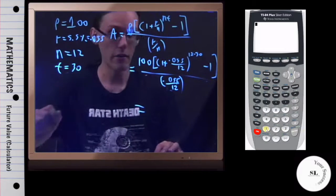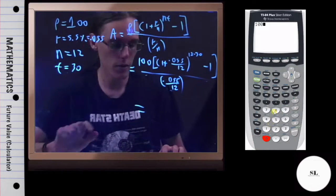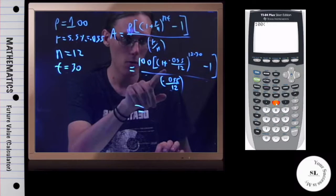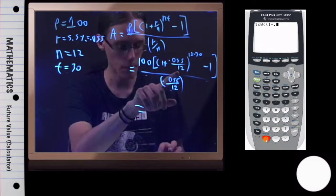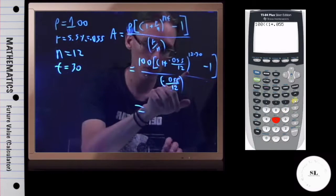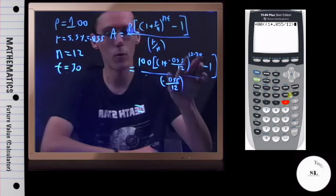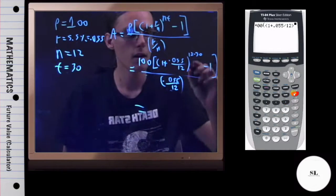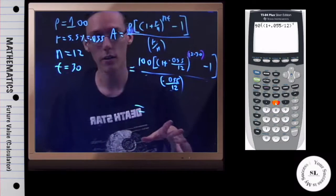So I'm going to do 100 times, opening parentheses, opening parentheses again, 1 plus 0.055 divided by 12, close these parentheses. This raised to—now whenever I have multiple things in a power here, I use parentheses even if I don't need them, because I'm just trying to be really careful that nothing gets confused in the calculator.